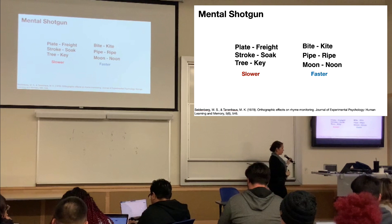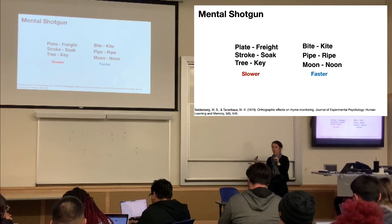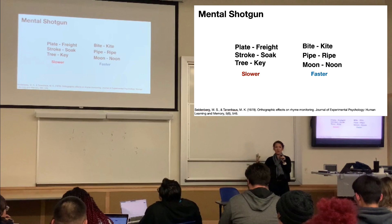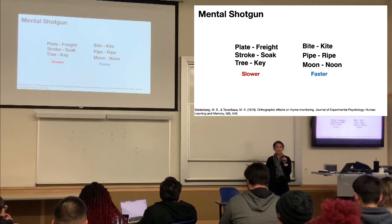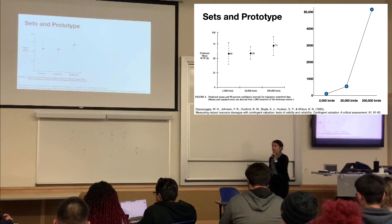The main concept is that when you think about one question or are presented with one type of information, you think in different associated ways automatically, and sometimes there's interference. Let's talk about another concept from the book: sets and prototypes.